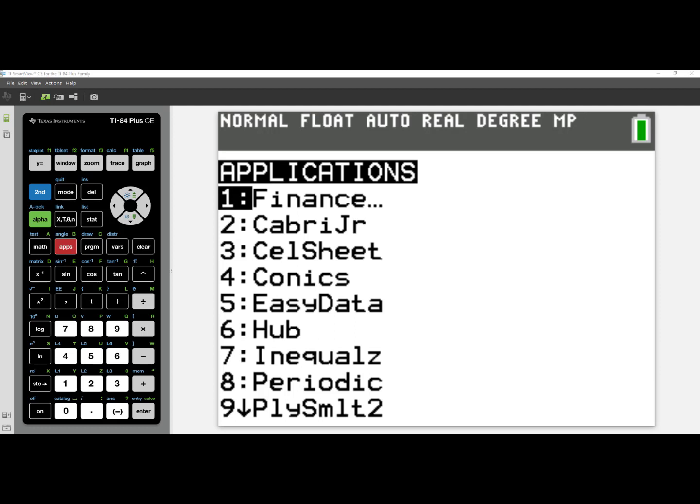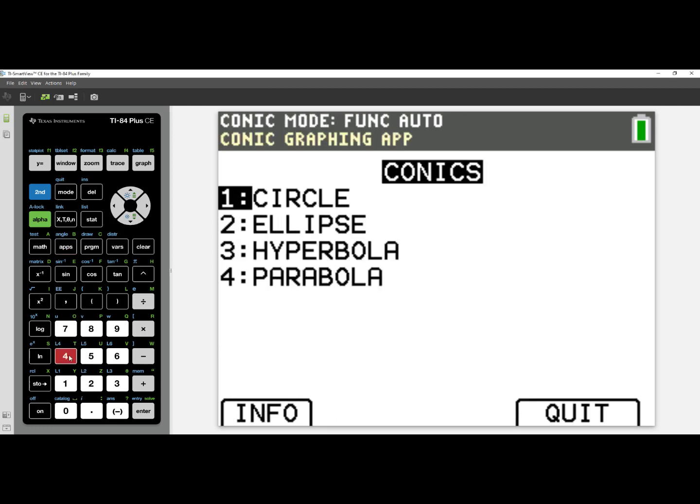I will include a link to that video in this video's description. I will select number four, Conics, and I'm now inside the app. I can see there are four options: Circle, Ellipse, Hyperbola, and Parabola.